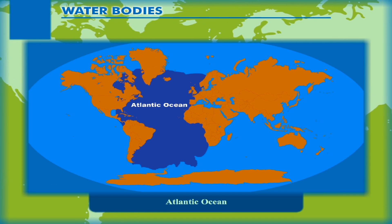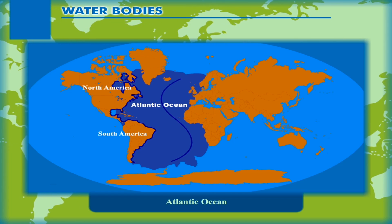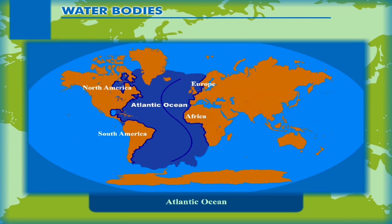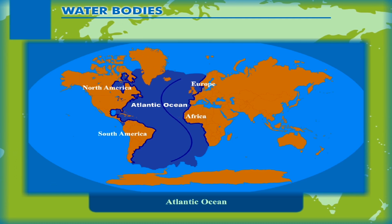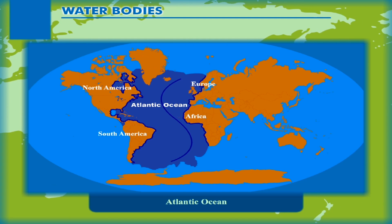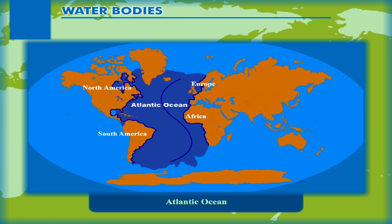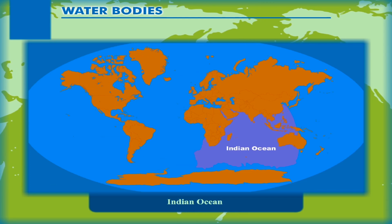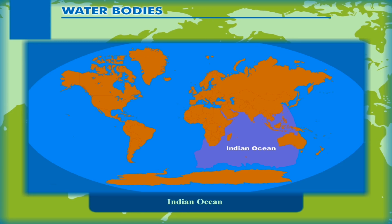Atlantic Ocean: This is the second largest ocean in the world and it resembles the shape of the letter S. It is bounded on the west by North and South America, on the east by Europe and Africa, and to the north it merges into the Arctic Ocean. This is the busiest ocean in the world. The coastline of the Atlantic Ocean is highly indented, and this irregular coastline provides ideal locations for natural harbors and ports.